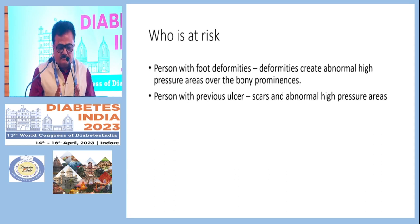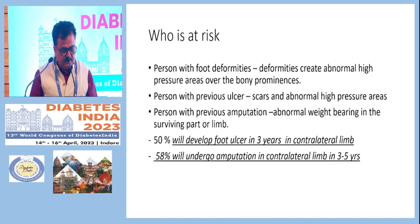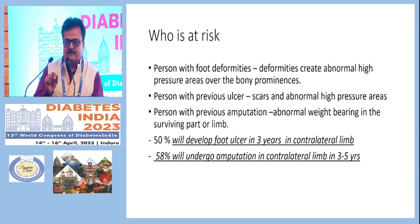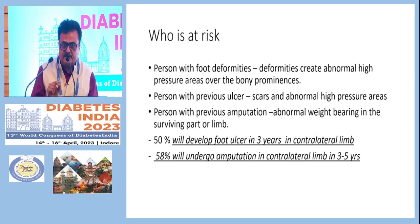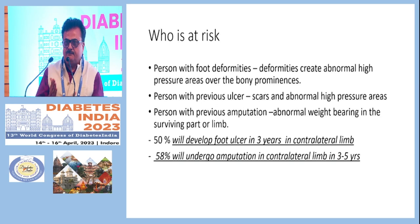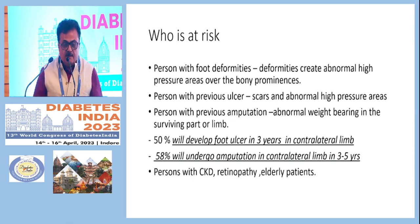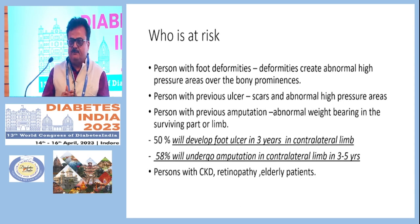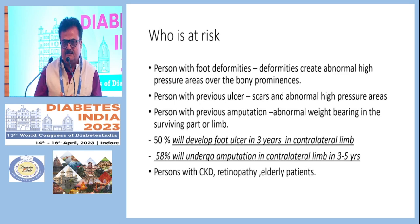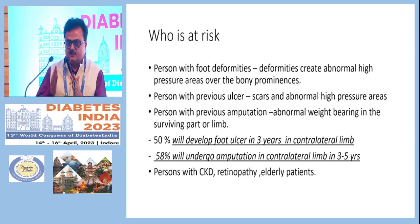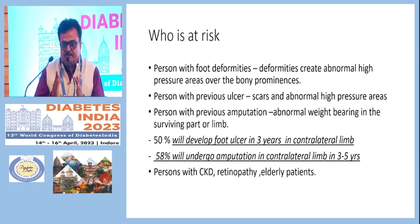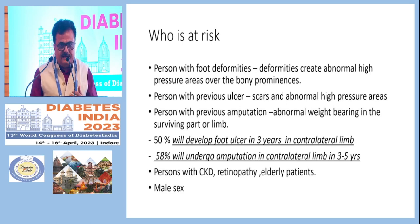A person with a previous ulcer — even a healed one — is one of the highest-risk categories. A person with a previous amputation is another extremely high-risk category: 50 percent of people who have undergone amputation may develop a foot ulcer in the surviving or contralateral limb, and 50 to 60 percent may require amputation of that limb. Patients with end-stage renal disease are also very high risk due to accelerated peripheral vascular disease, uremic neuropathy, poor nutrition, and impaired self-care from repeated dialysis.